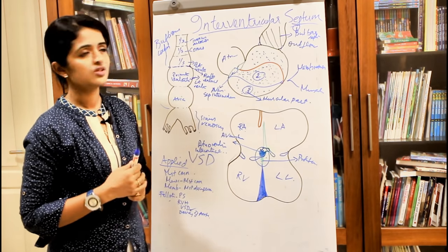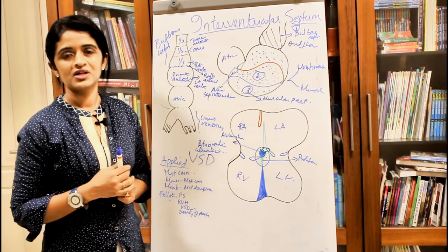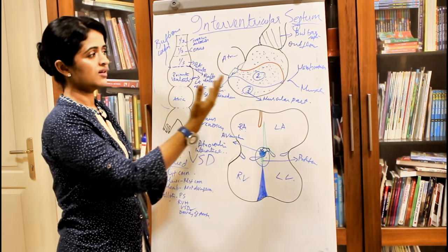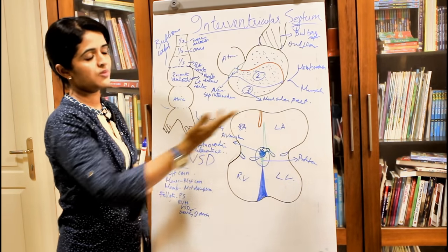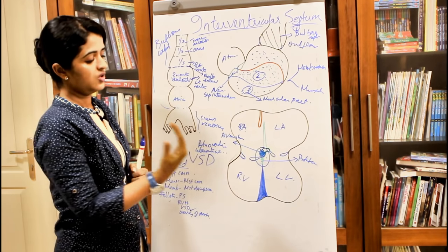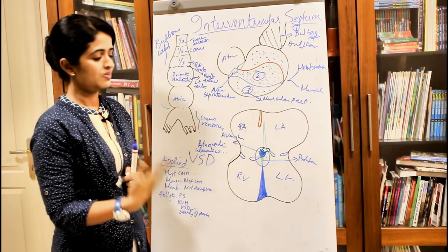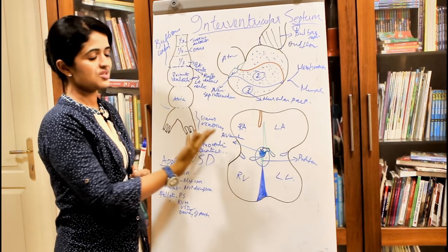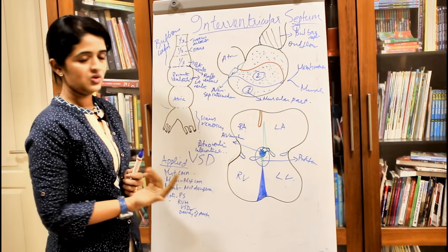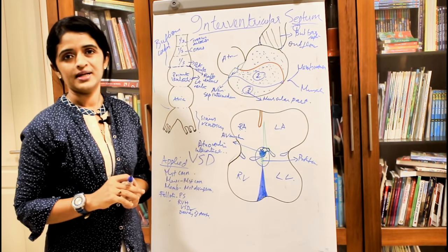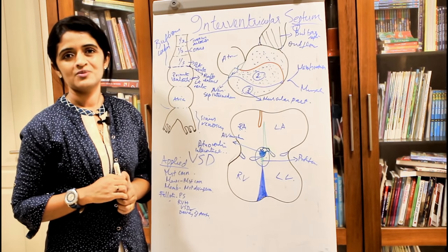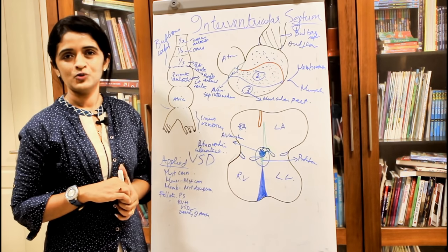For a short note on the interventricular septum, start with the heart tube, mention the membranous and muscular portions, add the atrioventricular septum for extra marks, and include applied aspects. This is all about the interventricular septum in a nutshell.